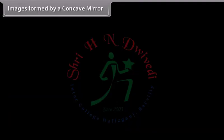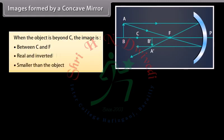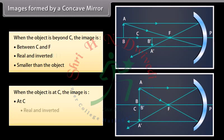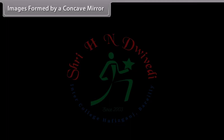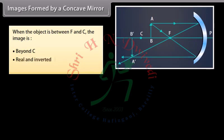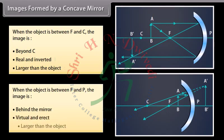Images formed by a concave mirror: when the object is beyond C, the image is between C and F, real and inverted, and smaller than the object. When the object is at C, the image is at C, real and inverted, and the same height as the object. When the object is between F and C, the image is beyond C, real and inverted, and larger than the object. When the object is between F and P, the image is behind the mirror, virtual and erect, and larger than the object.